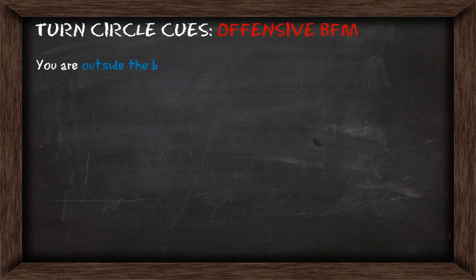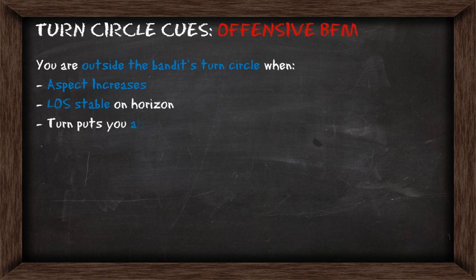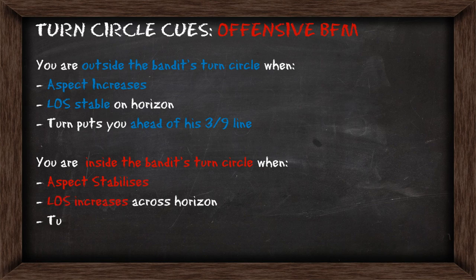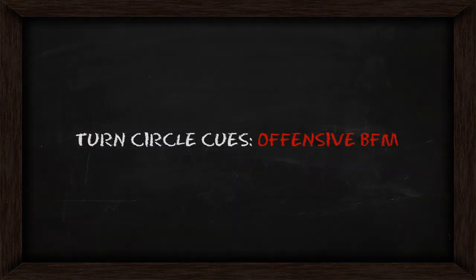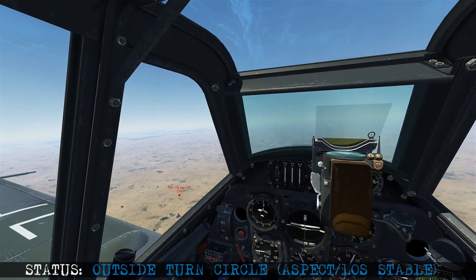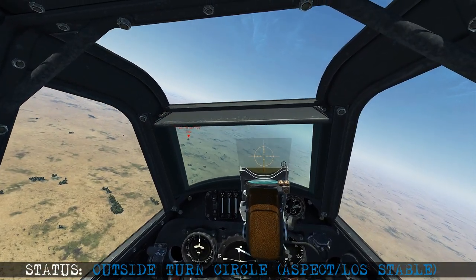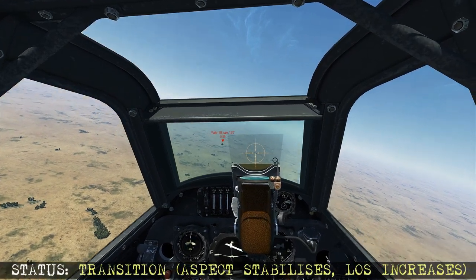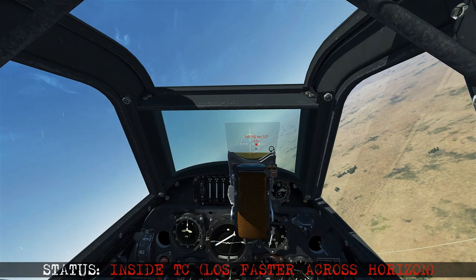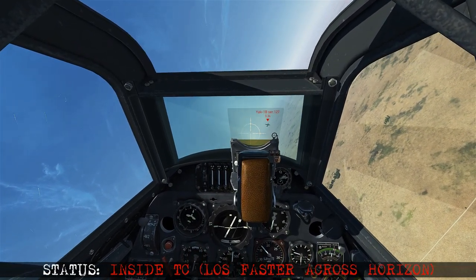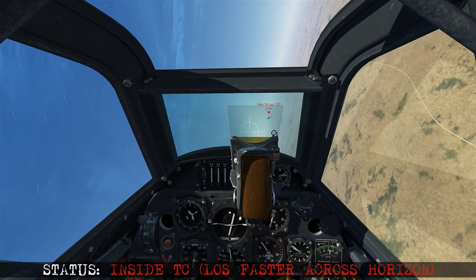If you're on the offensive, you're going to be outside the bandit's turn circle when his aspect increases, line of sight is stable on the horizon, or his turn will put you ahead of his 3-9 line. You'll be inside the bandit's turn circle when his aspect stabilises, line of sight increases across the horizon, and his turn can't put you ahead of his 3-9 line. In the offensive demo, as the bandit begins his turn, his aspect increases, then at the transition point the aspect stabilises and his line of sight rate across the horizon gets faster — at that point we've arrived inside his turn circle.